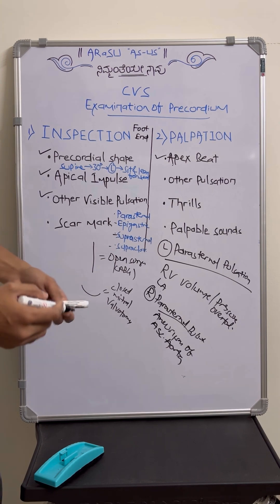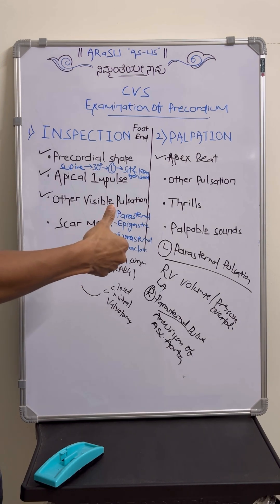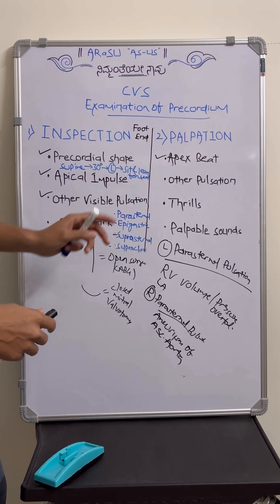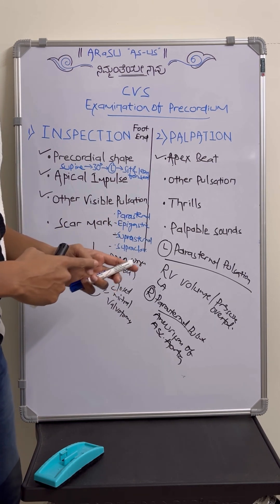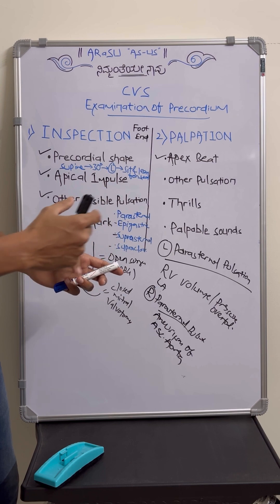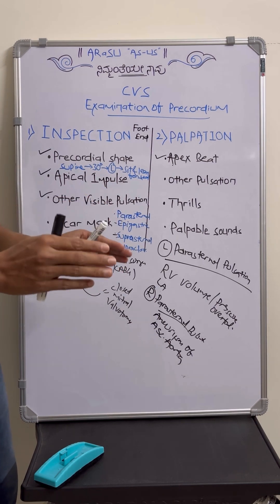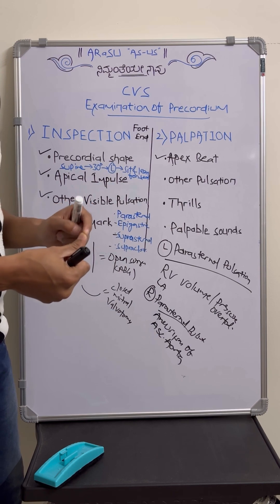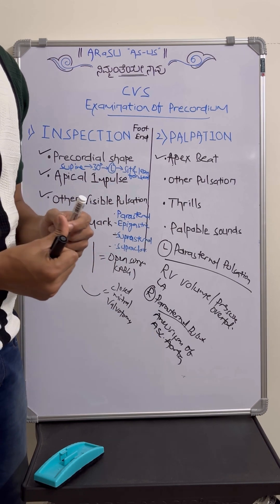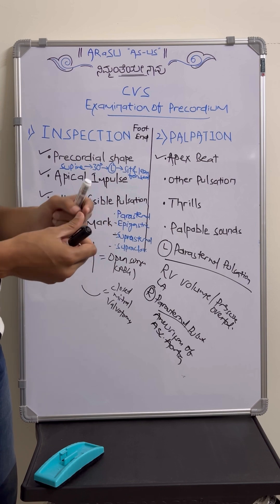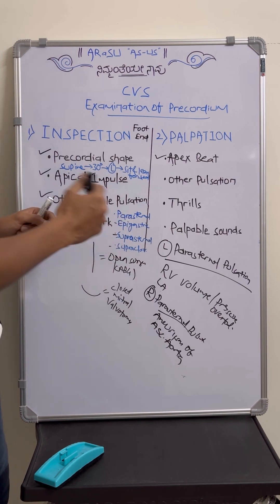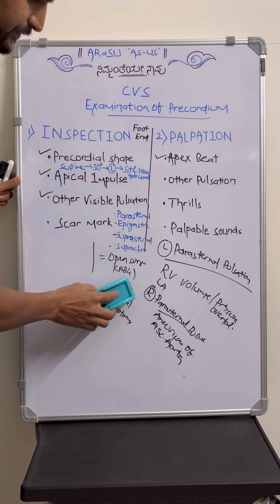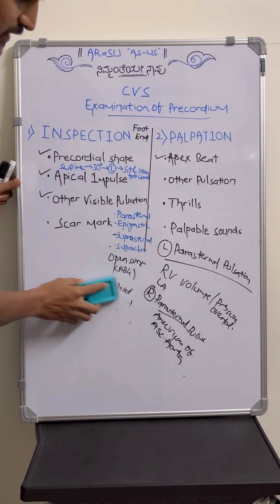We are left with epigastric pulsation. This is again important — use your thumb and keep it at the epigastrium and feel for the pulsation. It is suggestive of two things: either RV volume or pressure overload, or underlying aortic aneurysm. To differentiate — if the pulsation is felt at the pulp of the thumb, it is suggestive of aortic aneurysm; if felt at the tips, it is because of RV volume or pressure overload.